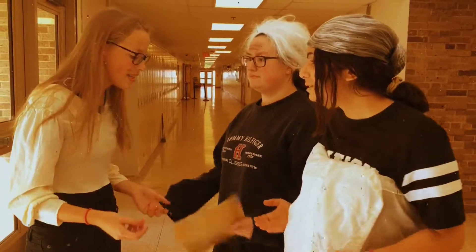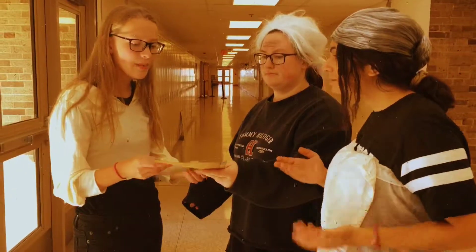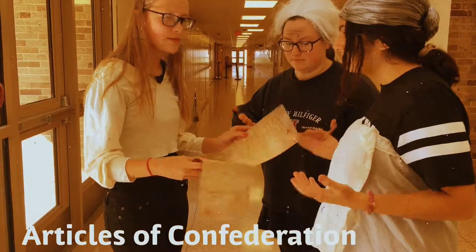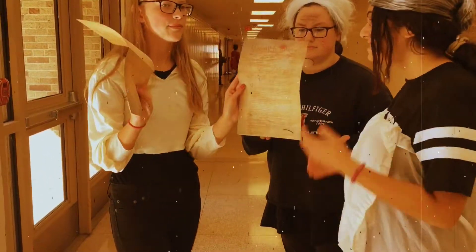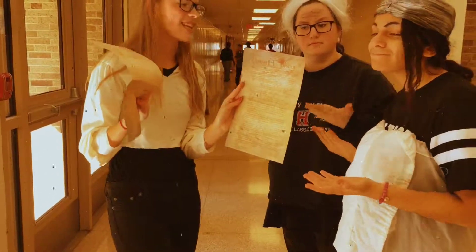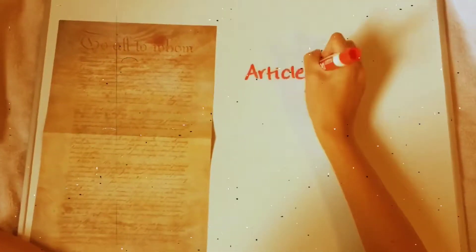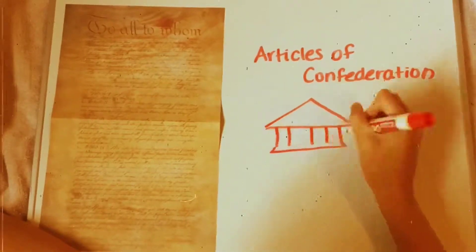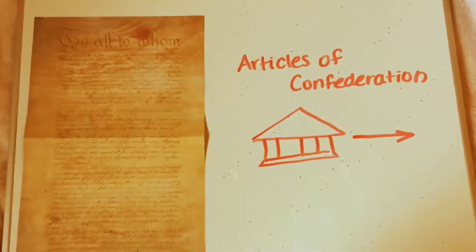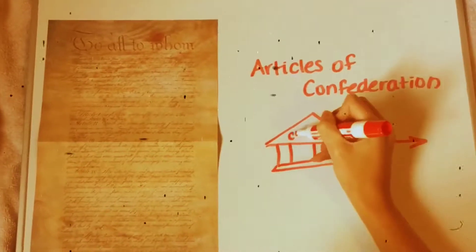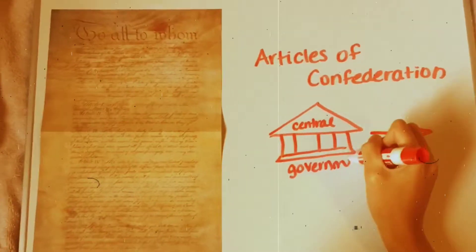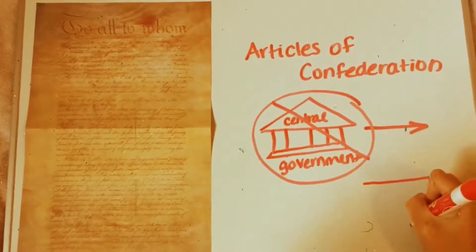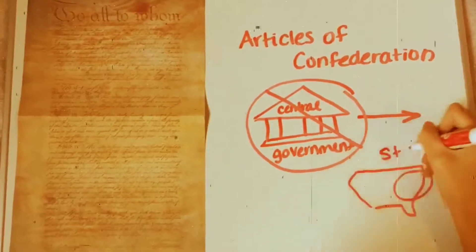The first form of constitution enacted by the United States was known as the Articles of Confederation, which was adopted by the Continental Congress in 1777. The Articles of Confederation established the functions of a national government of the United States. However, the Articles eventually failed due to the lack of central government and the increased focus on the individual states.